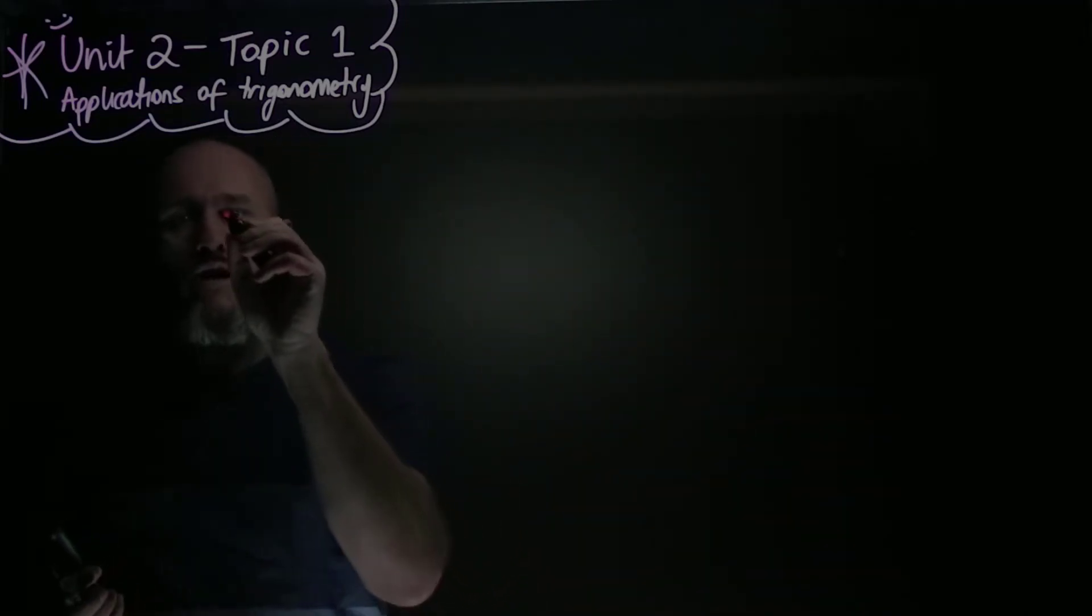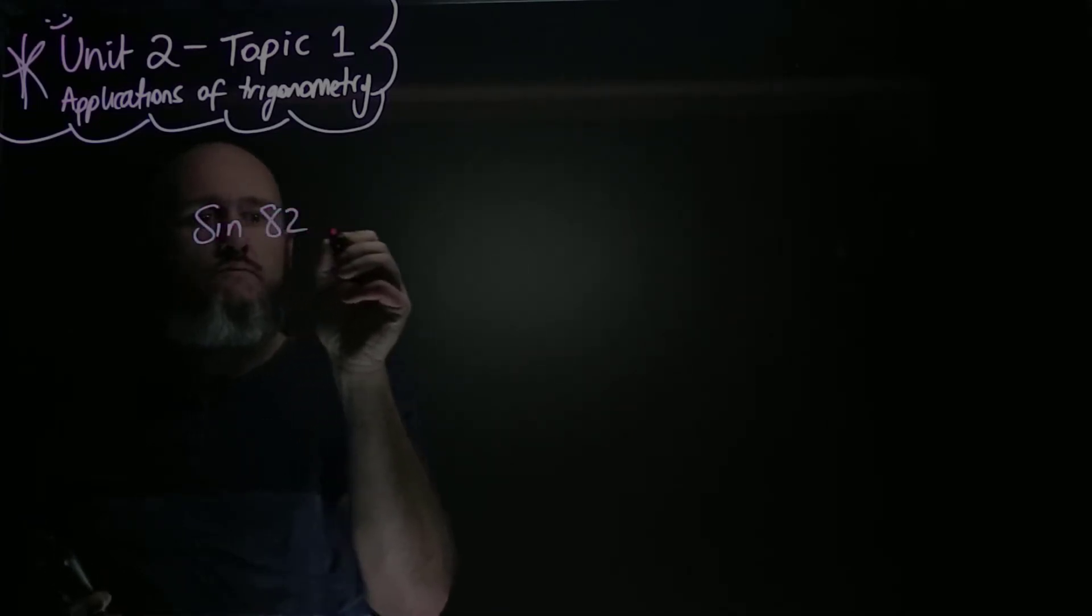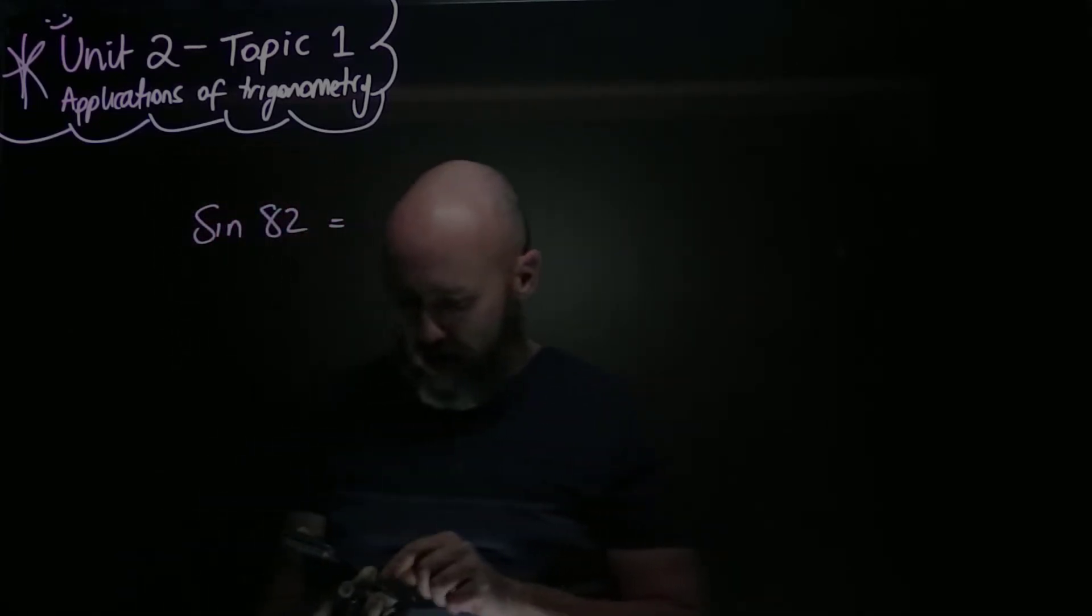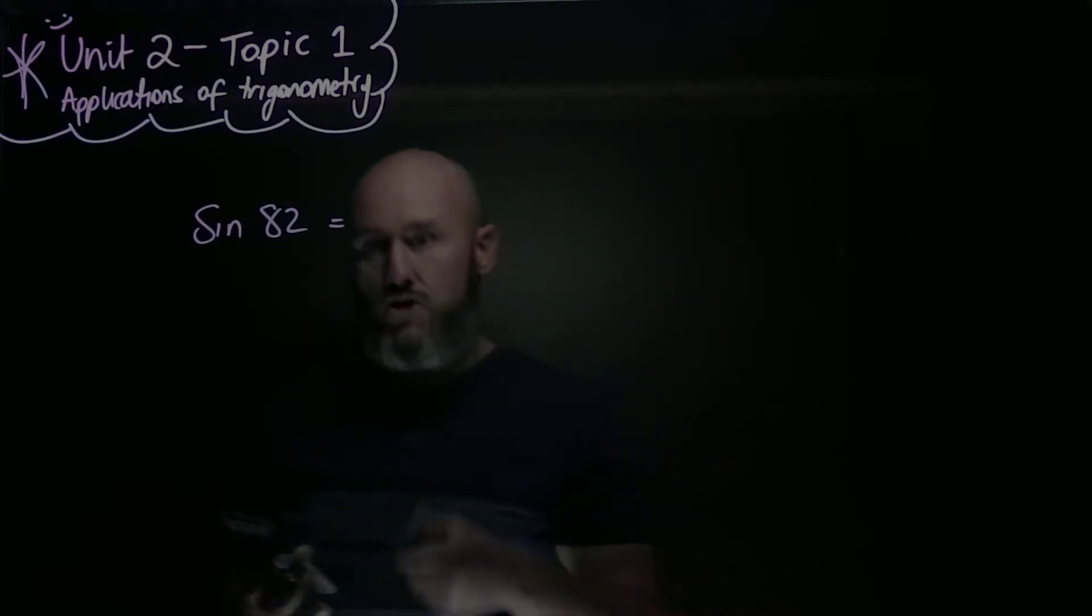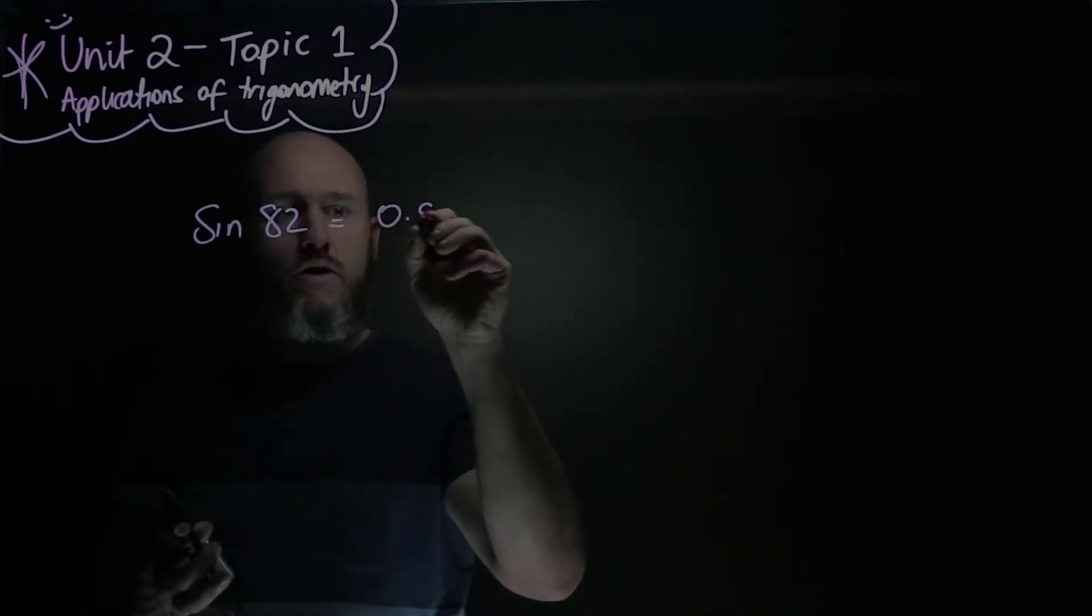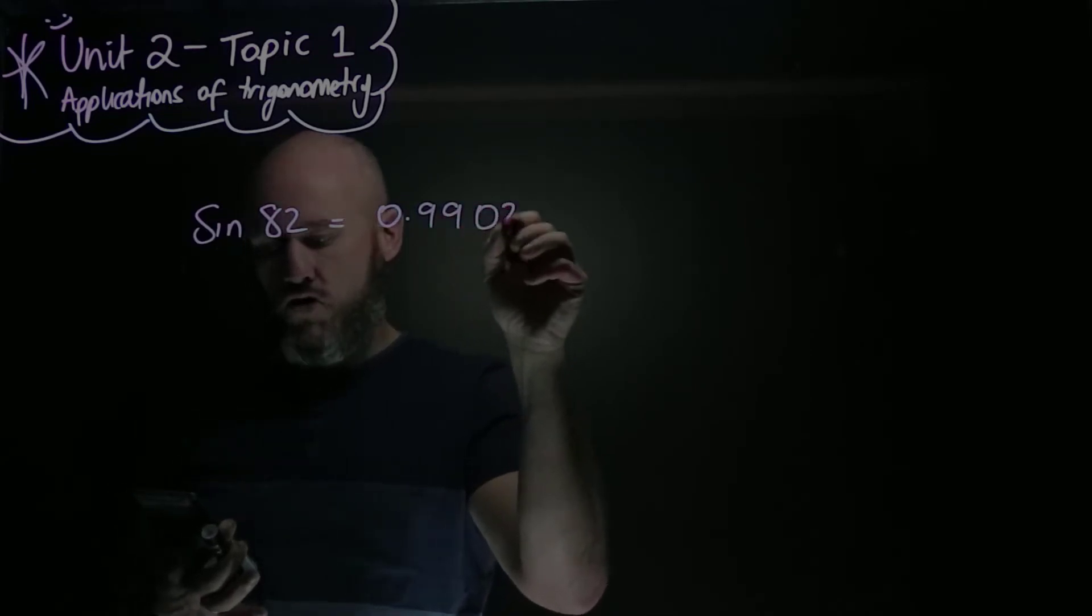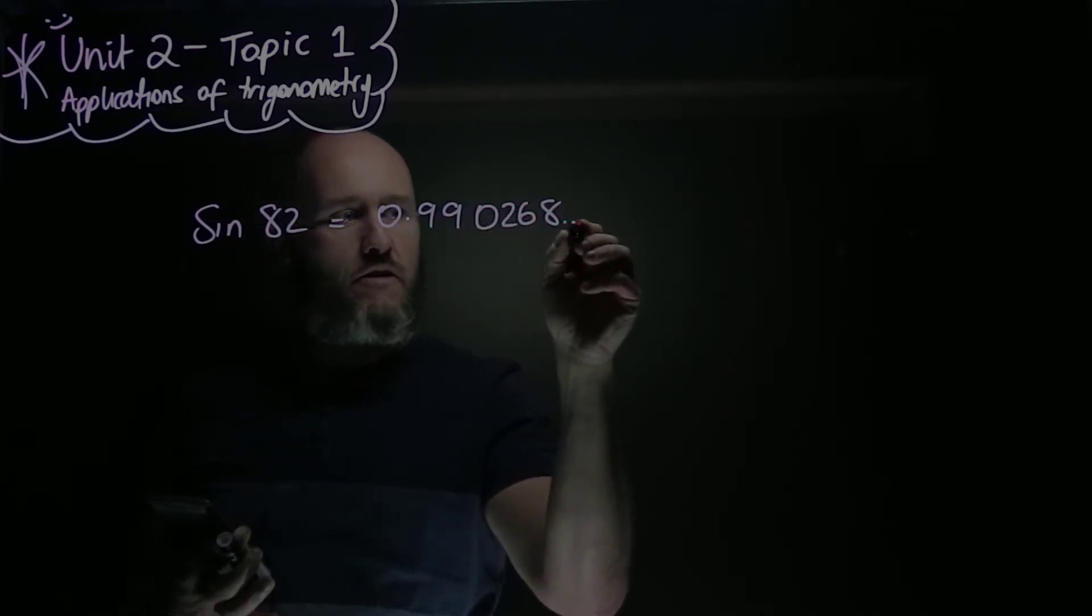But let's start with the fact that we can calculate sine of 82. I can pop that in my calculator, and I get sine of 82, and that's equal to about 0.990268.